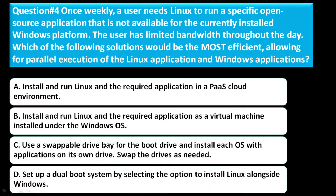Question number four: Once weekly, a user needs Linux to run a specific open source application that is not available for the currently installed Windows platform. The user has limited bandwidth throughout the day. Which of the following solutions would be the most efficient, allowing for parallel execution of Linux applications and Windows applications? Option A: install and run Linux and the required application in a PaaS cloud environment. Option B: install and run Linux and the required application as a virtual machine under the Windows OS. Option C: use a swappable drive bay for the boot drive and install each OS with its application on its own drive, swapping the drives as needed. Option D: set up a dual boot system by selecting the option to install Linux alongside Windows.